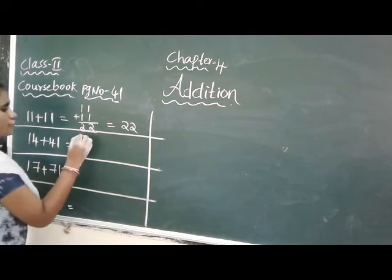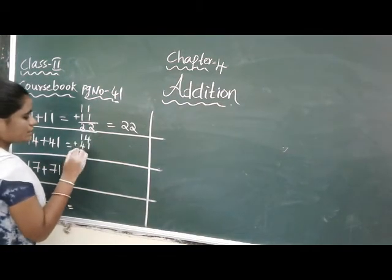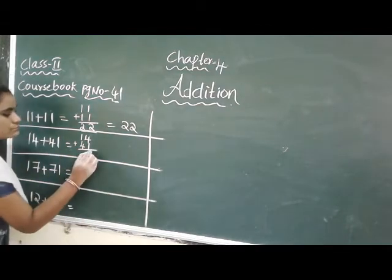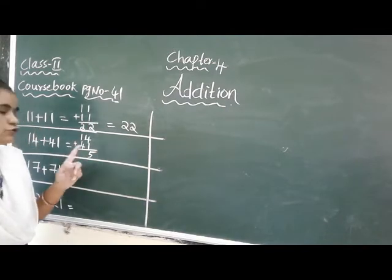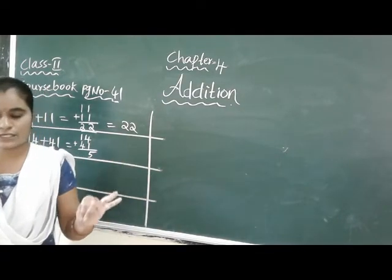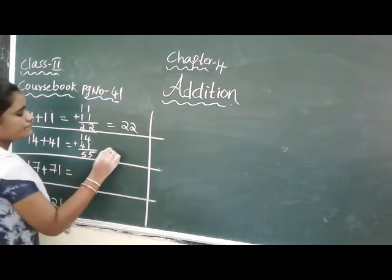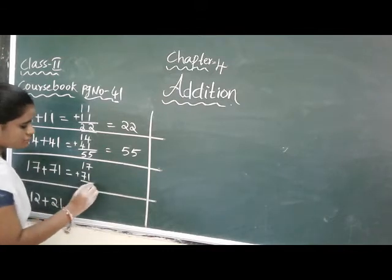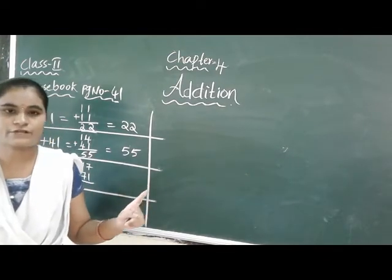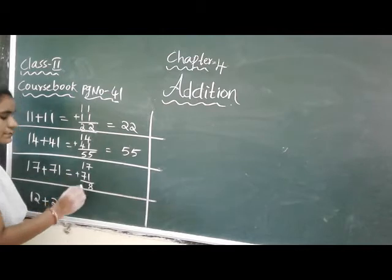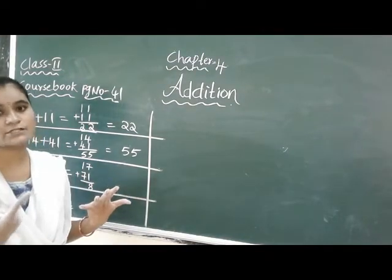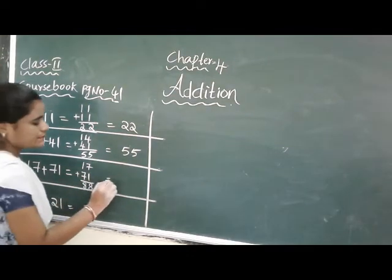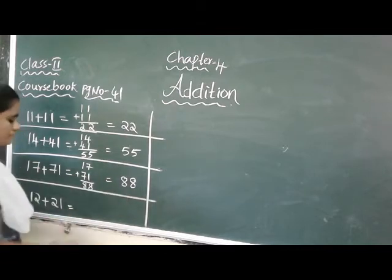Next: 14 plus 41. Do the addition. 4 in the mind, take 1 finger, 4 after 5 - that gives 5 in the ones. Then 1 in the mind, take 4 fingers, 1 after 2, 3, 4, 5 - that gives 5 in the tens. Answer is 55. Next: 17 plus 71. 7 in the mind, take 1 finger, 7 after 8. Then 1 in the mind, take 7 fingers, 1 after 2, 3, 4, 5, 6, 7, 8. Answer is 88.